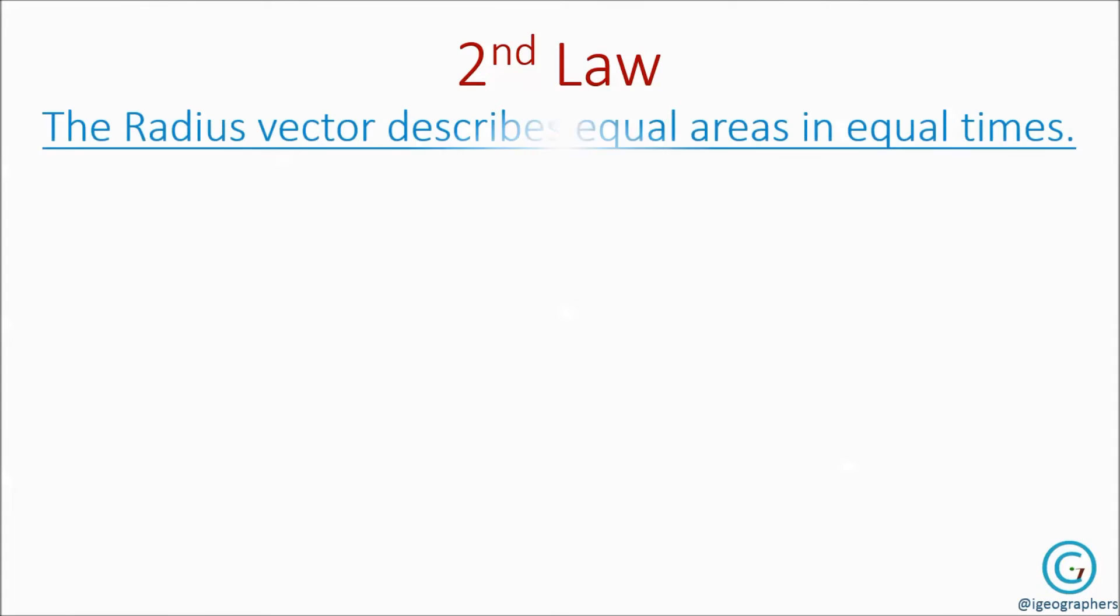The second law of planetary motion: the radius vector describes equal area in equal time.